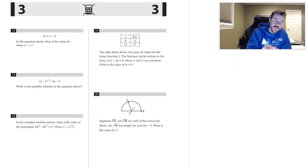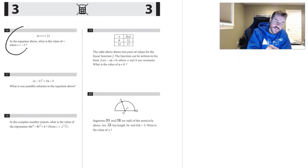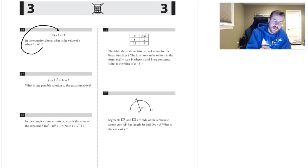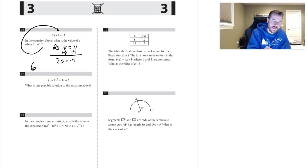Number sixteen: substitute t equals negative 1 into the equation. We get 2s minus 1 equals 11, so 2s equals 12, and s equals 6.